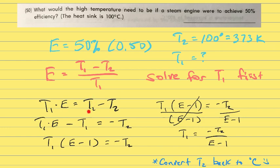Then I'm going to subtract the T1 from both sides, which brings it over here to the left. So now I have T1 times efficiency minus T1, equals negative T2.